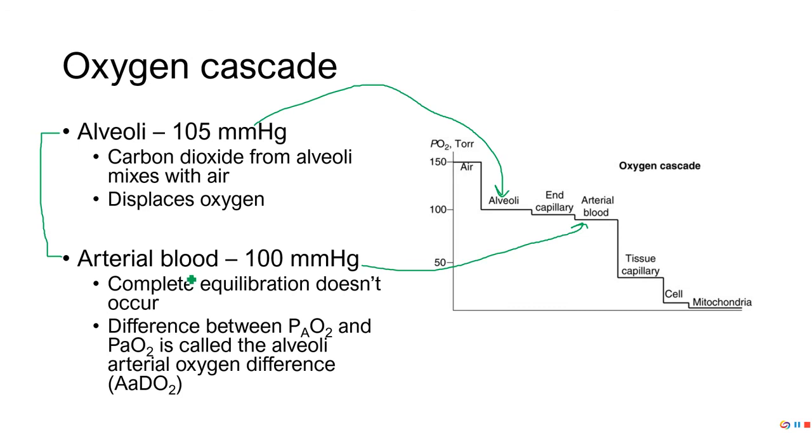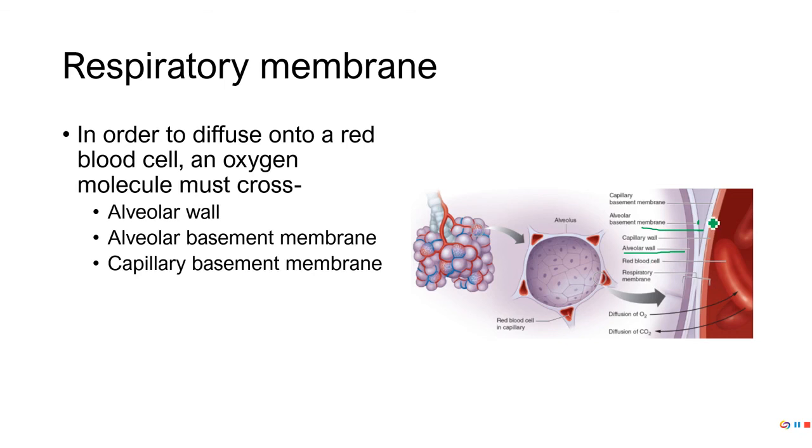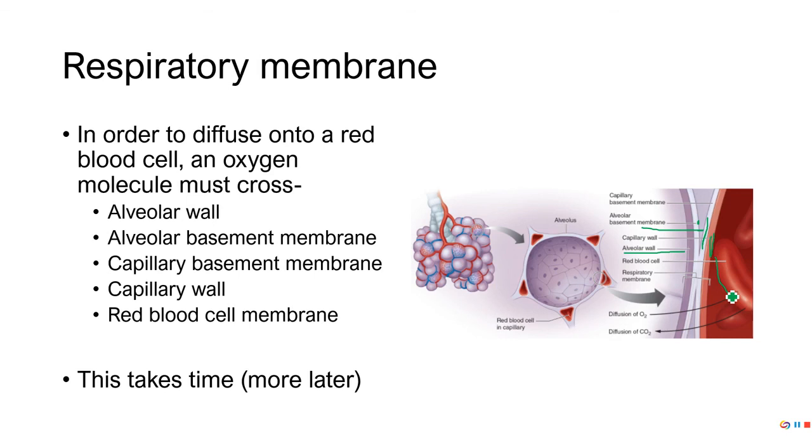We want to finish talking about diffusion. Diffusion takes time because it's got to cross a whole bunch of barriers. We're starting in the alveoli and have to get to the red blood cell. A molecule of oxygen has to cross the alveolar wall, then the alveolar basement membrane, then the capillary basement membrane, followed by the capillary wall, then the red blood cell membrane. This takes about a quarter of a second, which is plenty of time at rest, but during exercise, not necessarily. Keep that in mind as you watch the next video.